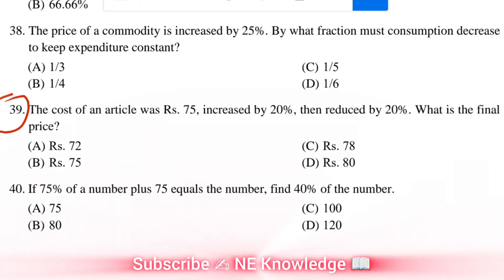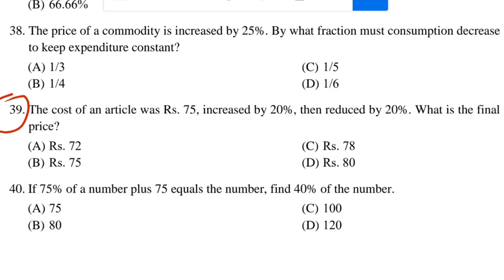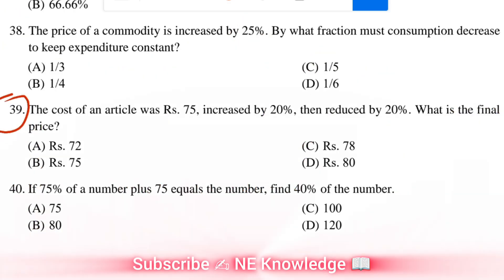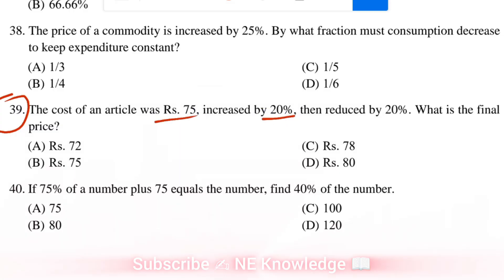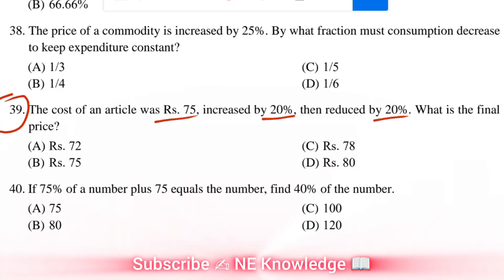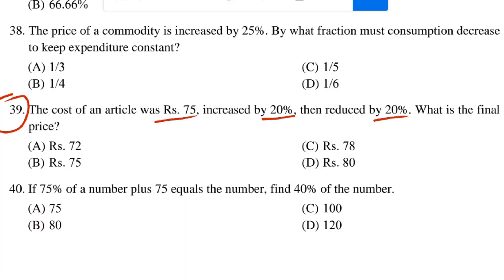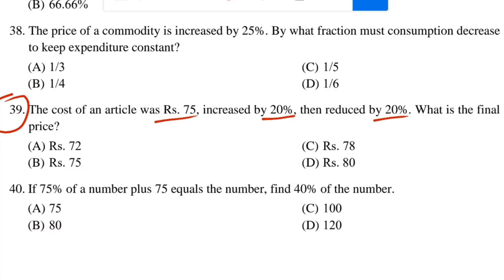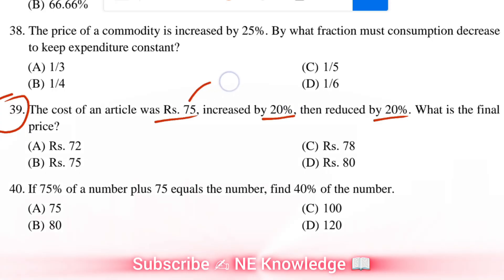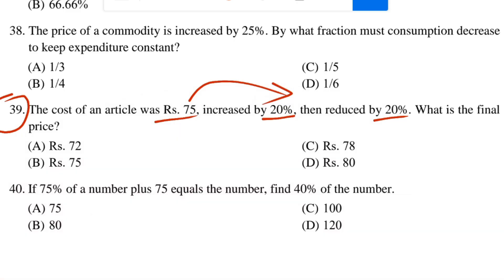The cost of an article was 75. Increase by 20%, then decrease by 20%. What is the final price? Initial cost, 20% increase then 20% decrease.